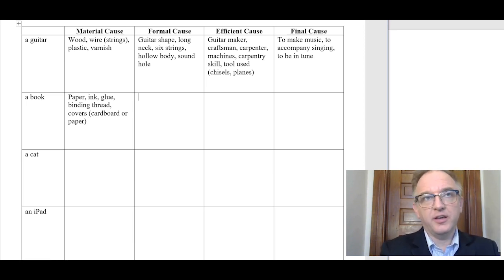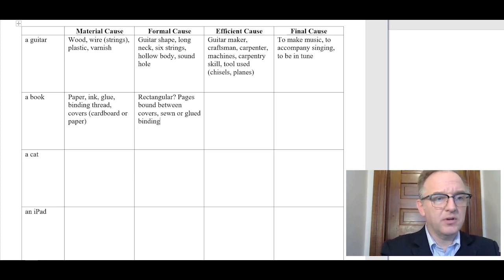Formal cause of a book. Well, what does a book look like? If I said that a cake or something else that wasn't a book looked like a book, what would I say it looked like? Well, usually rectangular. Maybe we say it's pages bound between covers, the covers being either board or paper, should have a sewn or glued binding. Sounds good.